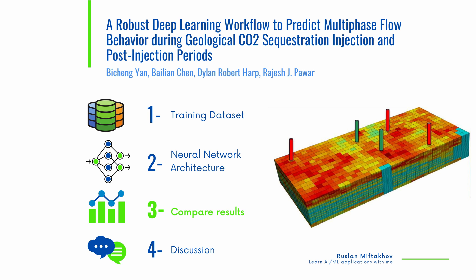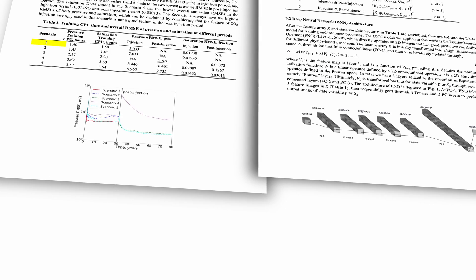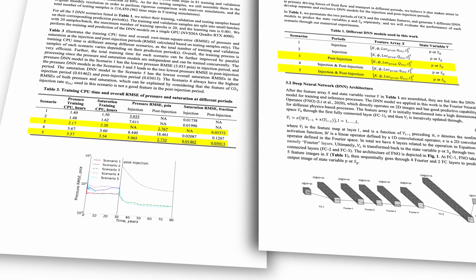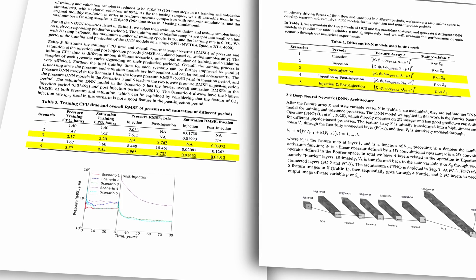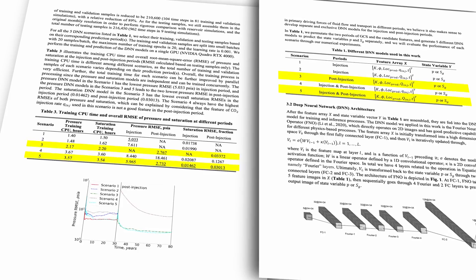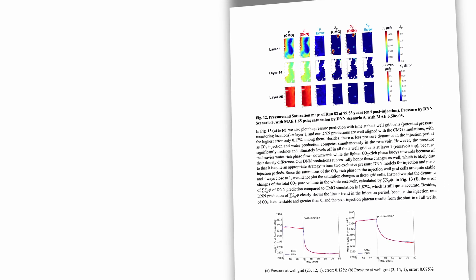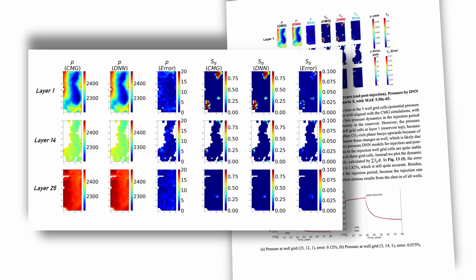Here comes the most interesting part — the results. In the CO2 injection stage, the pressure network in scenario 1, where CO2 injection is a feature, has the lowest error in pressure. The pressure network in scenarios 3 and 5, which includes cumulative CO2 injection as a feature, results in the two lowest pressure values in the post-injection stage. In scenario 5, the saturation neural network has the lowest overall saturation error in both injection and post-injection stages. They show that using two separate deep learning models to distinguish post-injection from injection stages generates the most accurate pressure predictions. The authors additionally selected a representative testing simulation run and depicted its pressure and saturation fields in different layers and stages to demonstrate the capabilities of time interpolation for the proposed deep learning network.